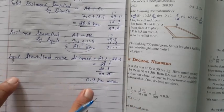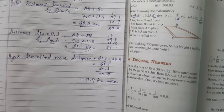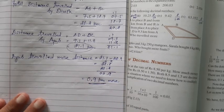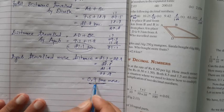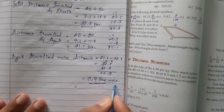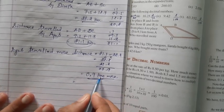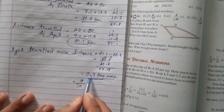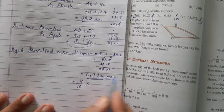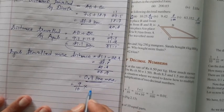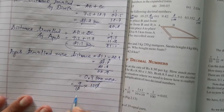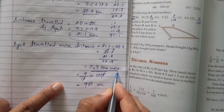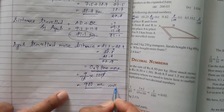Ayub traveled 0.9 kilometers more distance than Dennis. If required, we can convert to meters. To convert kilometer to meter, multiply by 1000. So 0.9 kilometers equals 900 meters. Ayub traveled 0.9 kilometers or 900 meters more than Dennis.